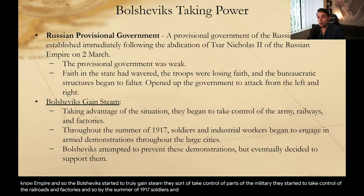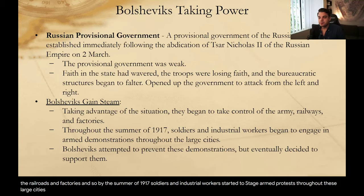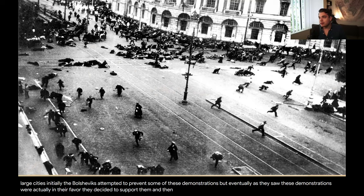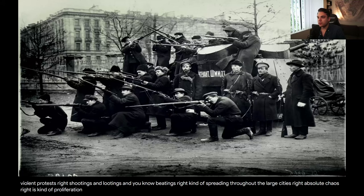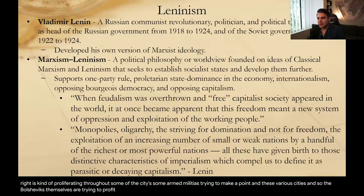By the summer of 1917, soldiers and industrial workers started to stage armed protests throughout the large cities. Initially the Bolsheviks attempted to prevent some of these demonstrations, but eventually, as they saw these demonstrations were actually in their favor, they decided to support them and even lead them. By July of 1917, we have these large violent protests — shootings and lootings and beatings spreading throughout the large cities. Absolute chaos proliferating throughout some of the cities. Armed militias and protesters trying to make a point, and the Bolsheviks themselves trying to profit off of this chaos.